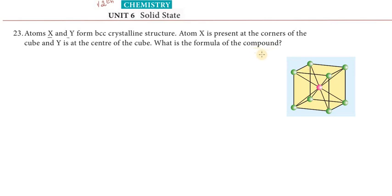We know in the BCC structure, corners are eight: one, two, three, four, five, six, seven, eight. The eight corners. Number of atoms of X in the unit cell: for corner atoms, the formula is number of corners divided by 8. So 8 divided by 8 equals 1. So total X equals 1.